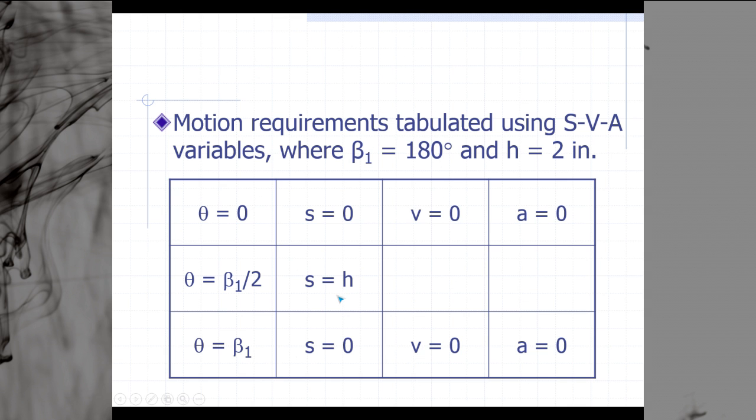We're at a position s equal to 2, and h and 2 are equal in this case. At the end of the fall, we are back down to s equals 0, velocity equals 0, and a equals 0, and we're ready to dwell. So we have 1, 2, 3, 4, 5, 6, 7 boundary conditions for this particular CAM design.